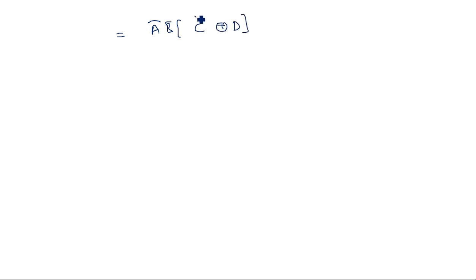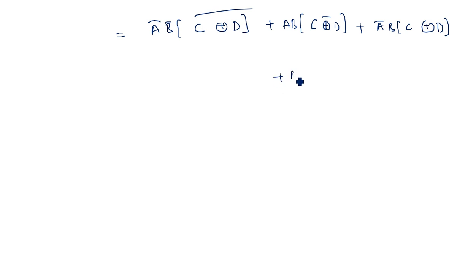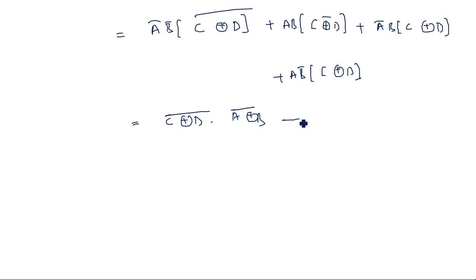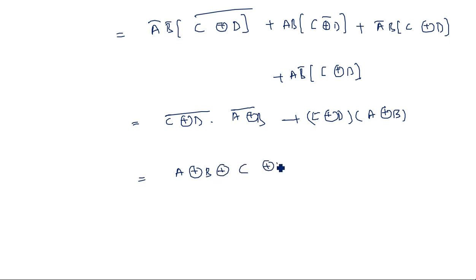Further simplifying, the expression reduces to: (C XNOR D) combined with (A XNOR B), and the full simplification gives f = A XOR B XOR C XOR D with a complement at the output. So the final expression is the XNOR of all four inputs, meaning f = A XNOR B XNOR C XNOR D, which is the complement of the XOR of all inputs.